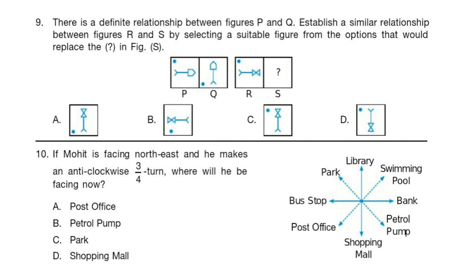Question 10: If Mohit is facing north-east and he makes an anti-clockwise 3/4 turn, where will he be facing now?